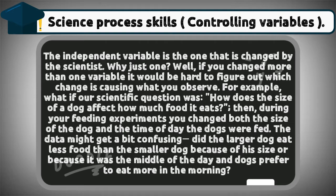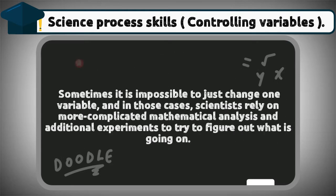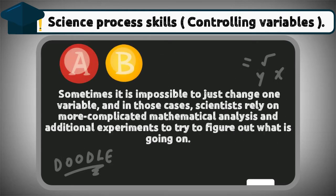For example, what if our scientific question was: how does the size of a dog affect how much food it eats? Then during your feeding experiments, you changed both the size of the dog and the time of day the dogs were fed. The data might get a bit confusing — did the larger dog eat less food than the smaller dog because of his size, or because it was the middle of the day and dogs prefer to eat more in the morning? Sometimes it is impossible to just change one variable, and in those cases scientists rely on more complicated mathematical analysis and additional experiments.